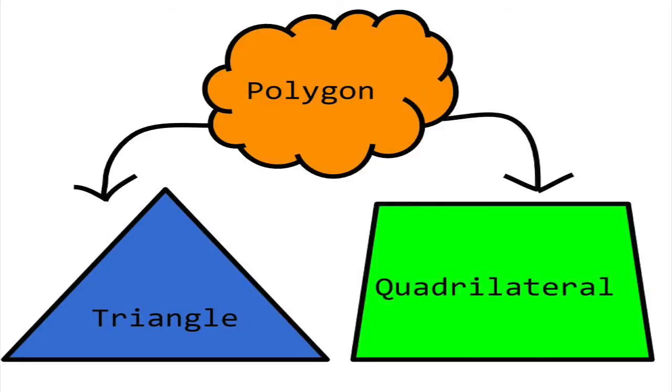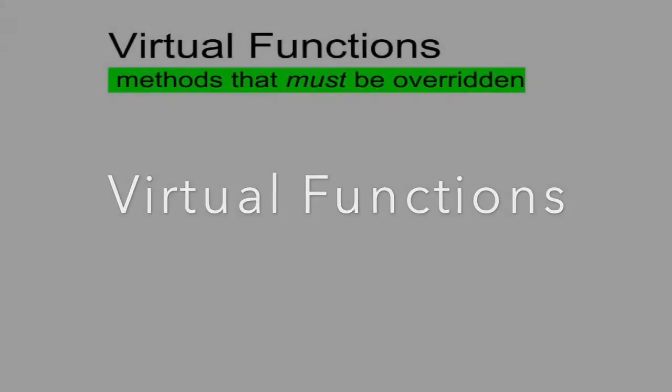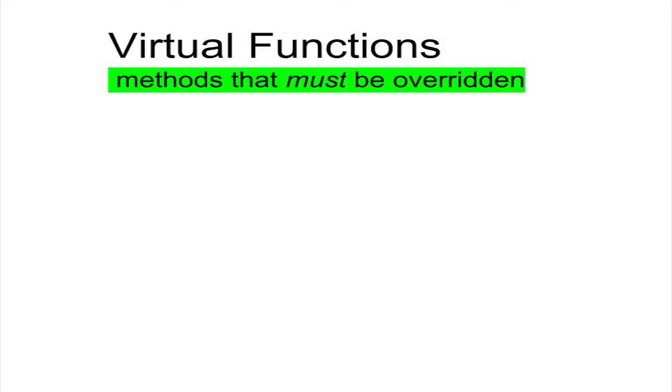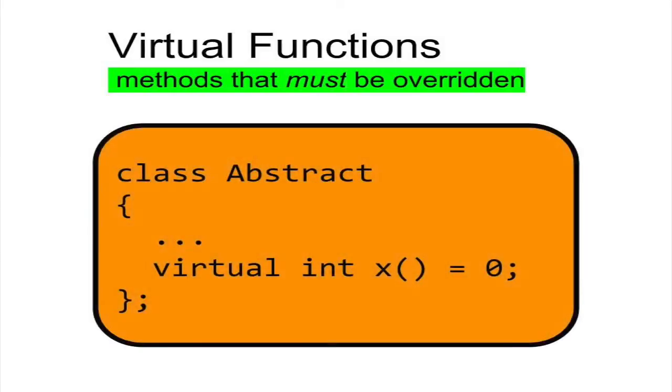In C++, an abstract class has at least one virtual function. A virtual function is a method in a base class that must be overridden by its derived classes. We declare the virtual function with the keyword virtual and set the function to equal zero.